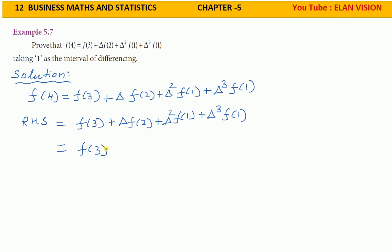f(3) plus delta f(2)... the last two terms, delta squared value, delta squared value at that time, f(1) will go, delta into f(1) will go. Next step: f(3) plus delta f(2) plus delta squared f(1) plus delta f(1). f(2)...